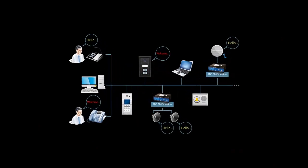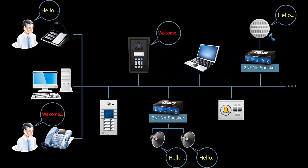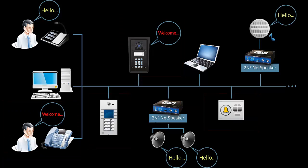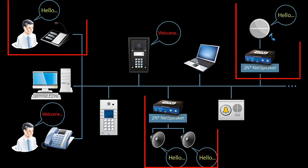Thanks to the RTP multicast feature, you can interconnect the IP public address system with third-party devices, such as door intercoms, Cisco IP phones, and other IP audio products, which are used for broadcasting audio content. You can stream different audio content to each device or to a group or zone of IP audio devices.